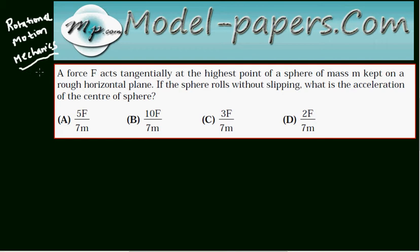The problem statement is given here. A force F acts tangentially at the highest point of a sphere of mass M kept on a rough horizontal plane. If the sphere rolls without slipping, what is the acceleration of the center of the sphere? There are four options given below: A, B, C, D.